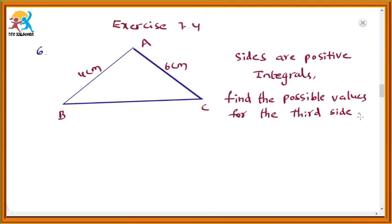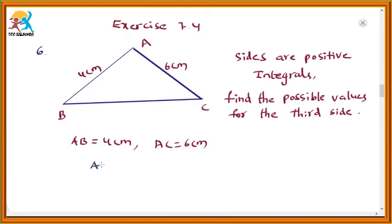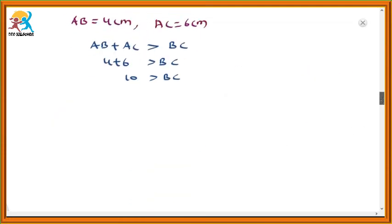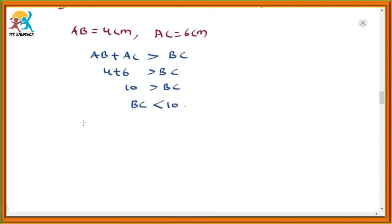Just observe this figure. These are the measurements for the triangle: 4 centimeters and 6 centimeters. We have to find out the third side. AB is equal to 4 centimeters and AC is 6 centimeters. We have to find out the third side BC. Using the inequality — the sum of two sides is greater than the third side — AB plus AC should be greater than BC. So 4 plus 6, which is 10, is greater than BC. That means BC should be less than 10. So the possible values for BC are 1, 2, 3, 4 ... 8 and 9.